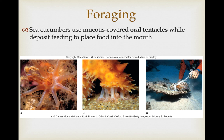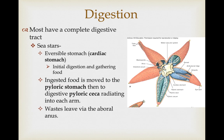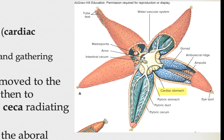Most have a complete digestive tract. Sea stars have a couple of stomachs — one is an eversible cardiac stomach, which they can push outside their body. They just need to crack open a mussel shell slightly, then evert their cardiac stomach into the shell, secreting digestive enzymes and taking up nutrients. That ingested food then moves to the pyloric stomach, then to the pyloric caeca, which radiate into each arm for continued digestion and nutrient delivery, with waste leaving via the aboral anus.